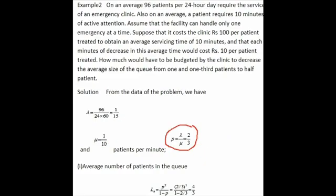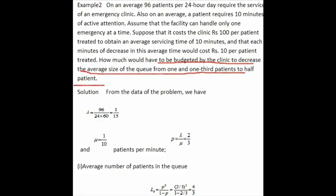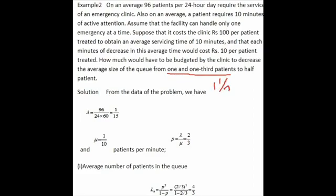The question asks how much would have to be budgeted by the clinic to decrease the average size of the queue from 1 and 1 third patients to half a patient. So the current queue length is 1 and 1 by 3, which equals 4 by 3, and the target is half a patient.